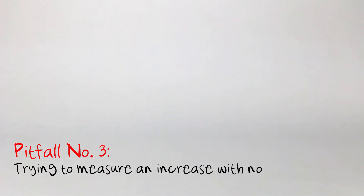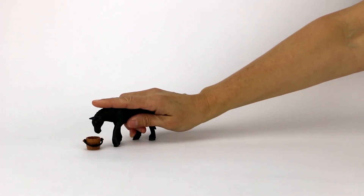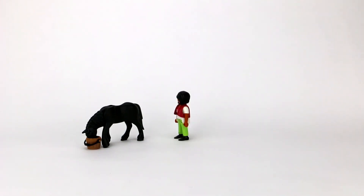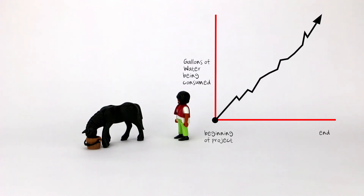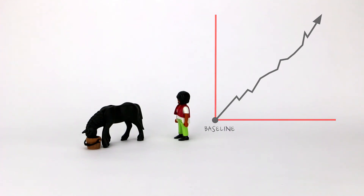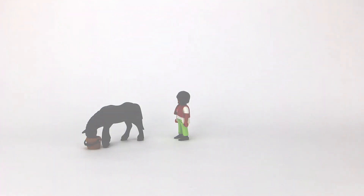Pitfall number three: trying to measure an increase with no baseline. If your progress indicators rely on things like increases, decreases, or improvements, you need to know what the starting point or baseline is. For example, if there was an indicator for the horse to increase its water intake, you need to know what the measurement is at the beginning of the project in order to measure the increase. This is a baseline. And if you can't take a baseline measurement, you need to change the indicator.